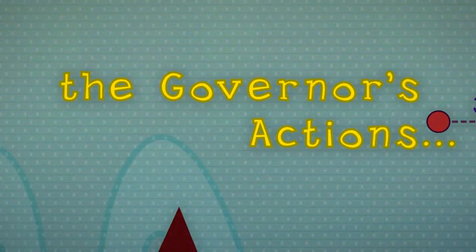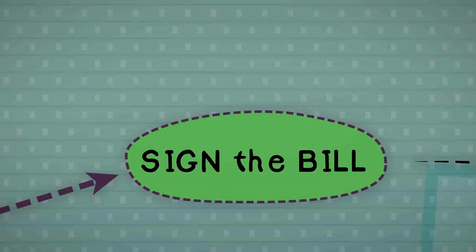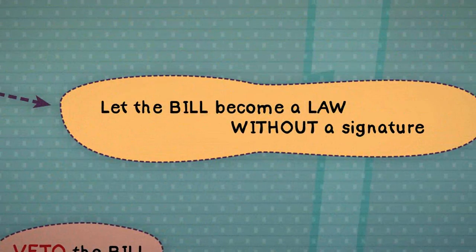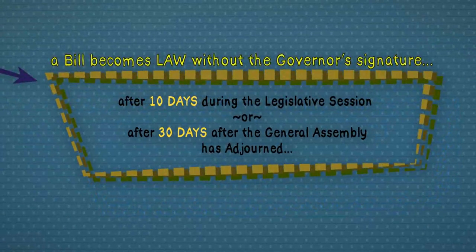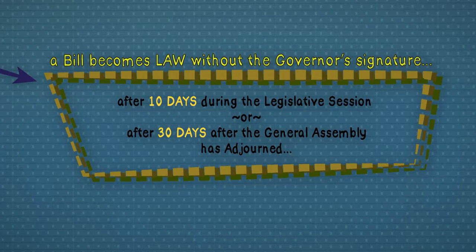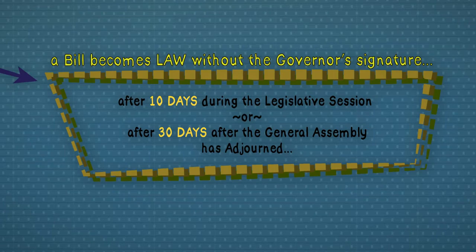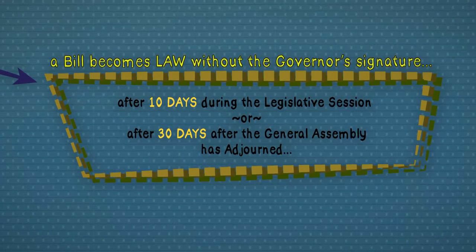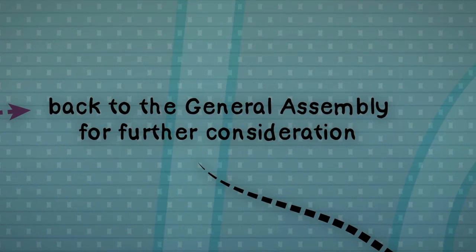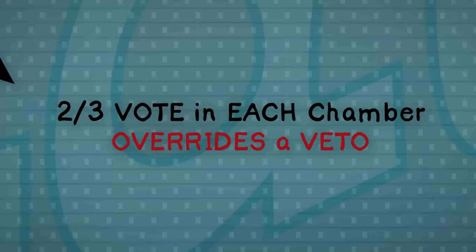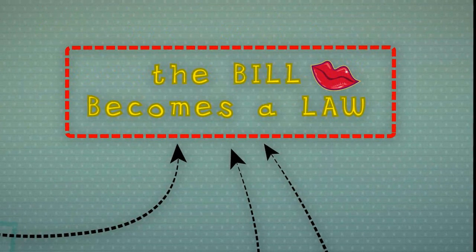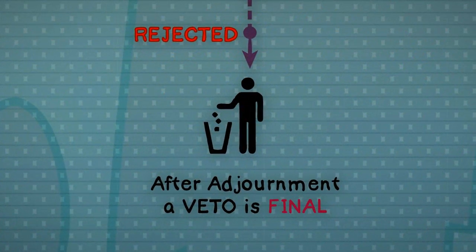The governor then has three options once their office receives a bill. The governor can sign the bill into law, he or she can veto the bill, or he or she can let the bill become law without their signature. A bill becomes law without the governor's signature after 10 days if he or she receives the bill during the legislative session, or after 30 days if he or she receives the bill after the General Assembly has adjourned. If the governor vetoes the bill before the General Assembly adjourns, it goes back to the General Assembly for more consideration. If a bill can be approved by two-thirds of the members in each chamber, the veto is overridden and the bill becomes a law. Vetoes occurring after the General Assembly adjourns are final.